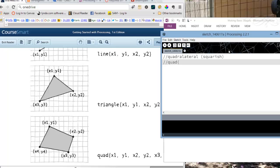Quad is x1, y1, x2, y2, x2, I'm sorry, x3, y3, x4, y4. And this is going to become my notes on how to program.